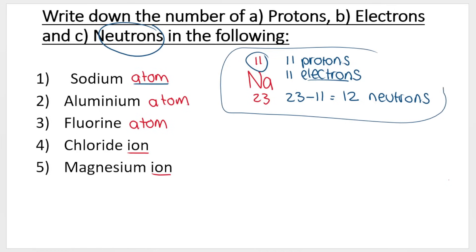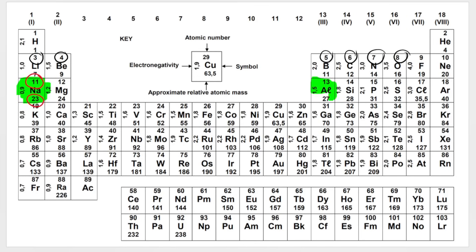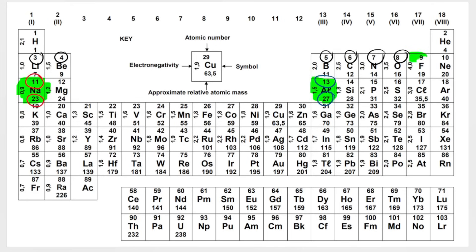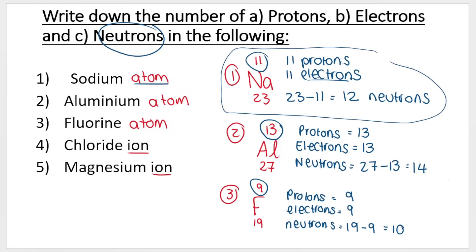Now that you know how to do sodium, try aluminium and fluorine. Aluminium on the periodic table has 13 and 27 — so 13 protons, 13 electrons, and 27 minus 13 equals 14 neutrons. For fluorine, it has 9 and 19 — so 9 protons, 9 electrons, and 19 minus 9 equals 10 neutrons.